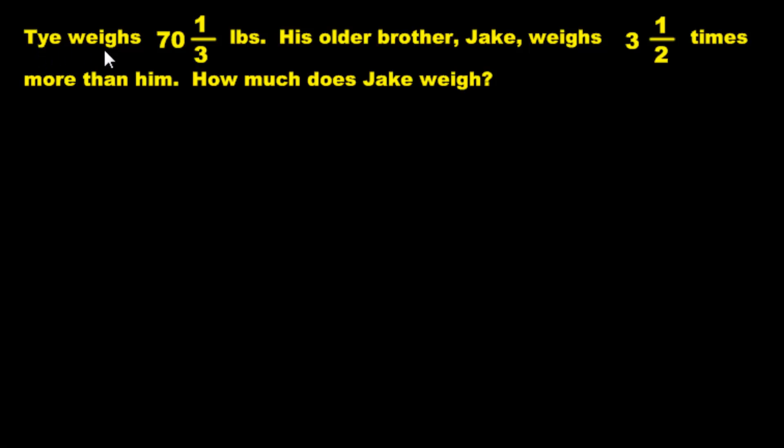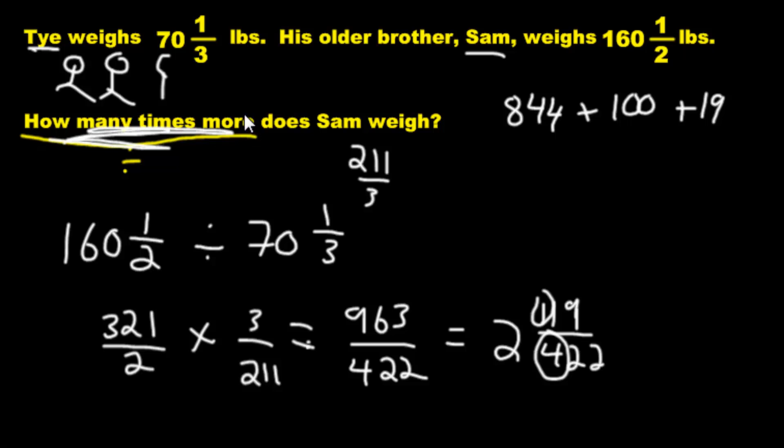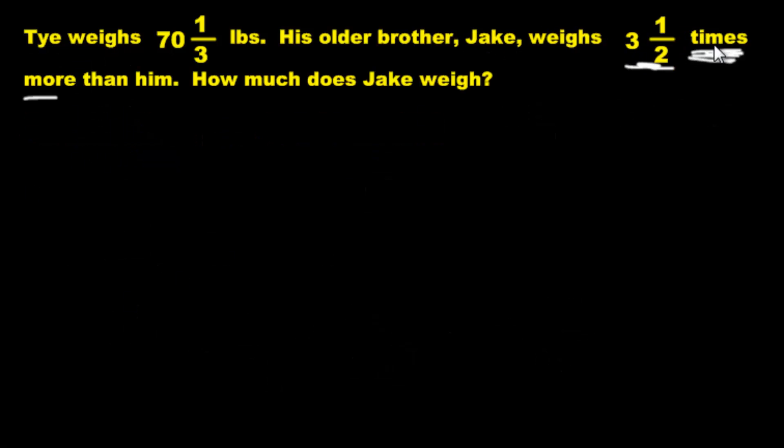Now we have question number 3. We have Tye weighs this many pounds. His older brother Jake—this is, I guess, the older older brother—weighs 3½ times more than him. How much does Jake weigh? Hmm. How much does Jake weigh? What's the clue? What's the clue? Look carefully. Yes, right here. Weighs this many times more than him. A number with times right after it is always going to mean multiplication. Compare it to the last question where it said how many times more. See, there's no number before the word times. It just says how many times more. That's division. But if it says the number and then the word times after it, you've got yourself multiplication.